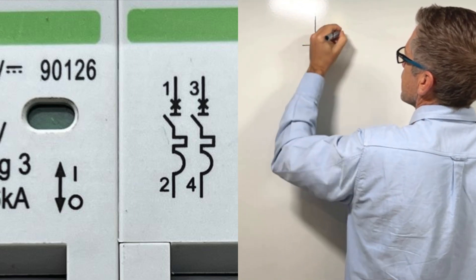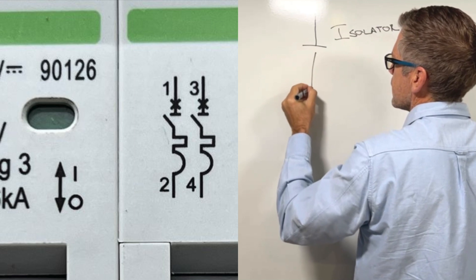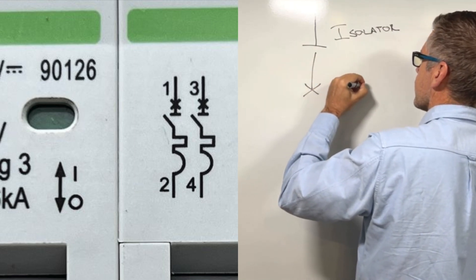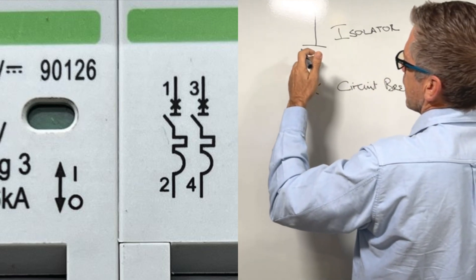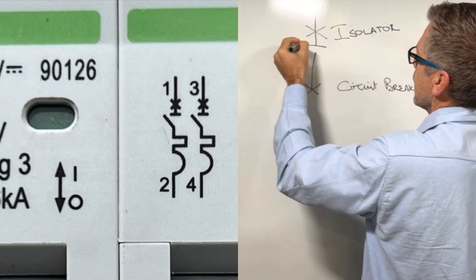That symbol is an isolator and that symbol is a circuit breaker. So the minute you get a symbol like what we just saw where you've got an X and an N to the line.